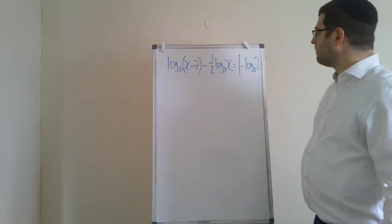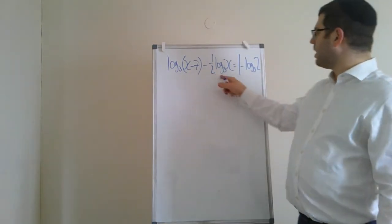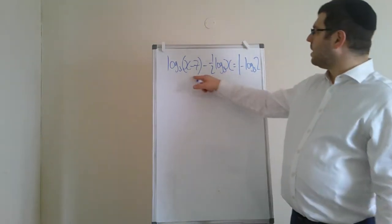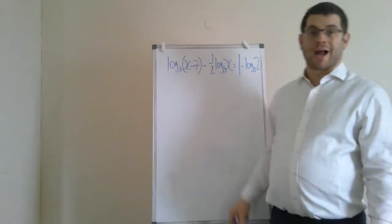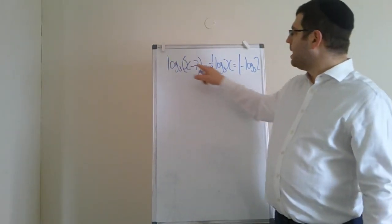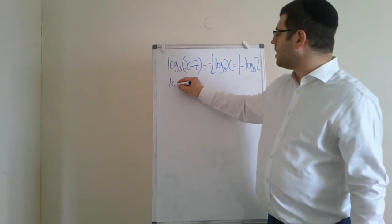Right, so let's see. I can see I've got quite a few logs here—one, two, three. To start with, let's combine these logs together. They're being subtracted, so let's use the division law for logs. There's no coefficient there, but there is this half. I'm going to have to pop that up, so let's do that first.